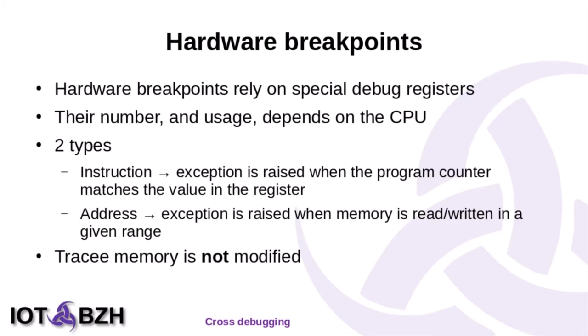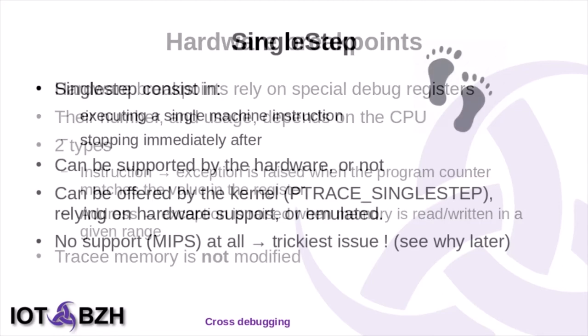Hardware breakpoints use hardware support. The number of available hardware breakpoints and how to use them depends on the CPU. There are two types: instruction breakpoints, which trigger when the program counter reaches a location, and address breakpoints, which are very useful to detect or debug crashes due to altered memory. It is worth noting that usually it covers not just a specific address but a range of addresses. The main advantage of hardware breakpoints is that the tracing memory is not modified at all.